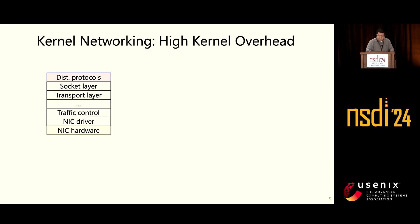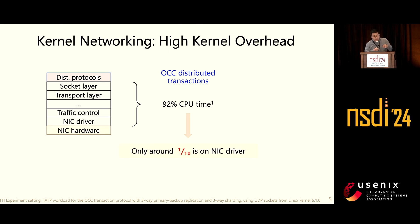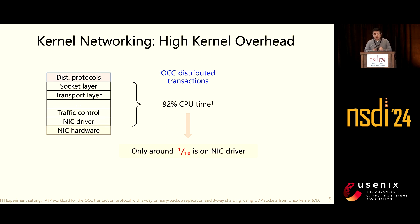Based on our measurements, implementing a simple OCC distributed transaction protocol spends around 90% of CPU time on various socket functions such as send-to or receive-from. Among that CPU time, only around one-tenth is spent on the NIC driver function — actually sending or receiving messages. This high kernel overhead squeezes the CPU time available for application operations, therefore severely degrading application performance.